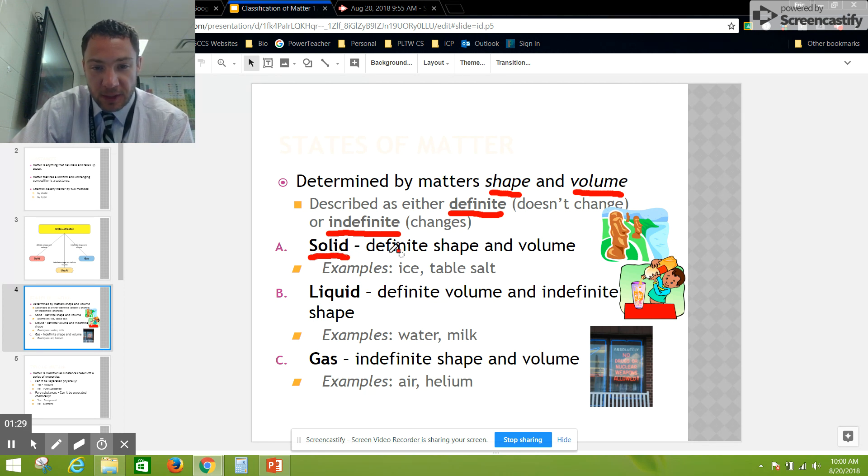First state: solid. This is any matter that has a definite shape and definite volume. For example, ice, when ice is solid water, will keep its shape and won't change in volume. Same thing with table salt. Those are examples of solids.